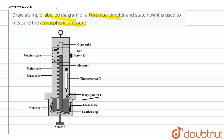The position of the mercury level in the barometer tube is noted with the help of the main scale and the vernier scale. The sum of the vernier scale reading and the main scale reading gives the barometric height. By this way, atmospheric pressure is measured using the Fortin barometer.